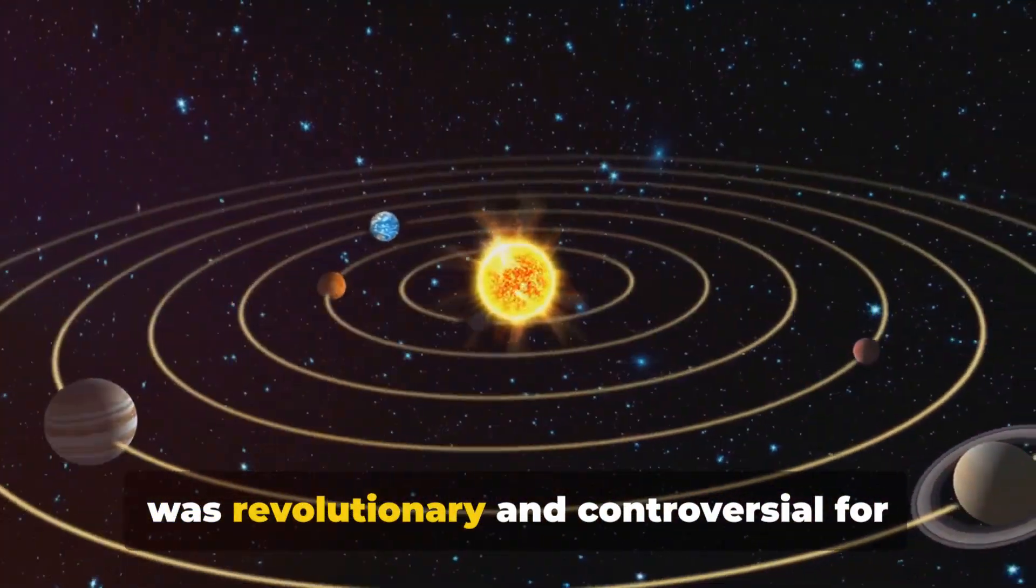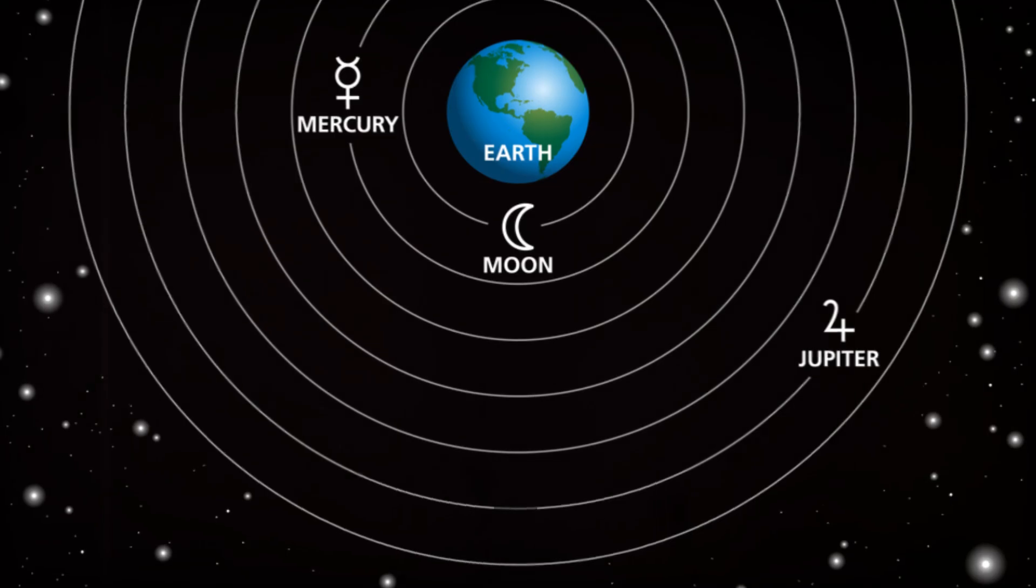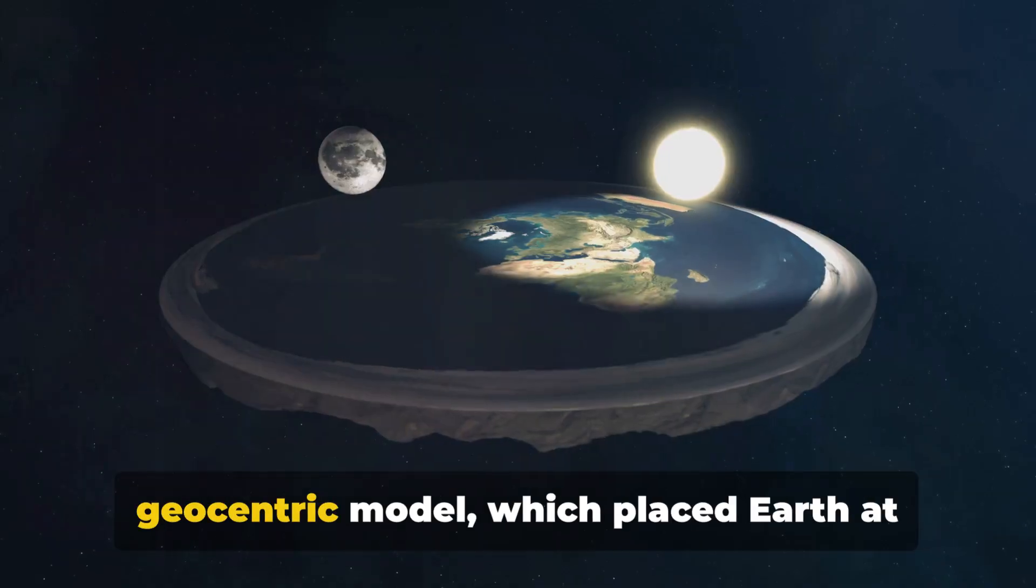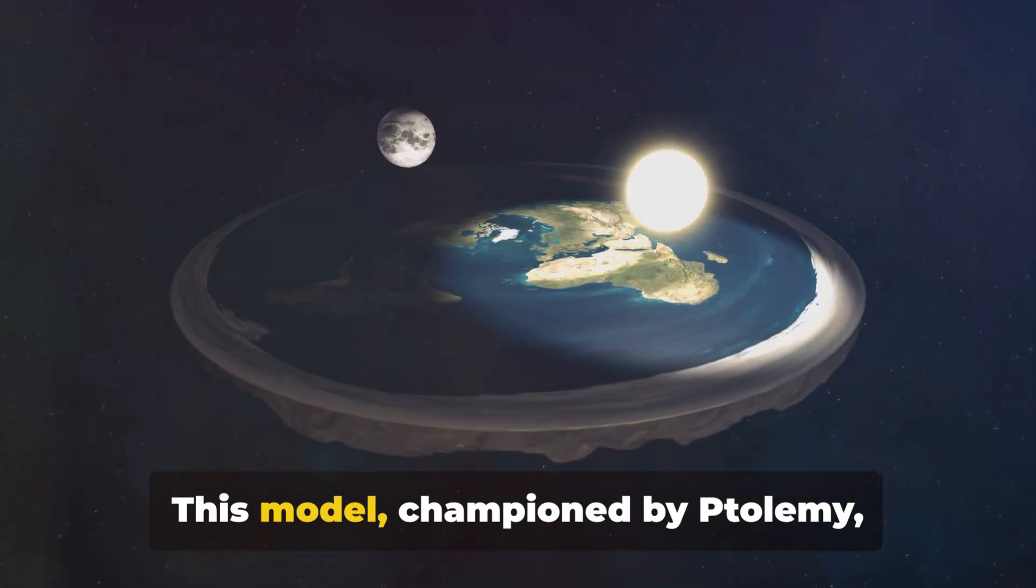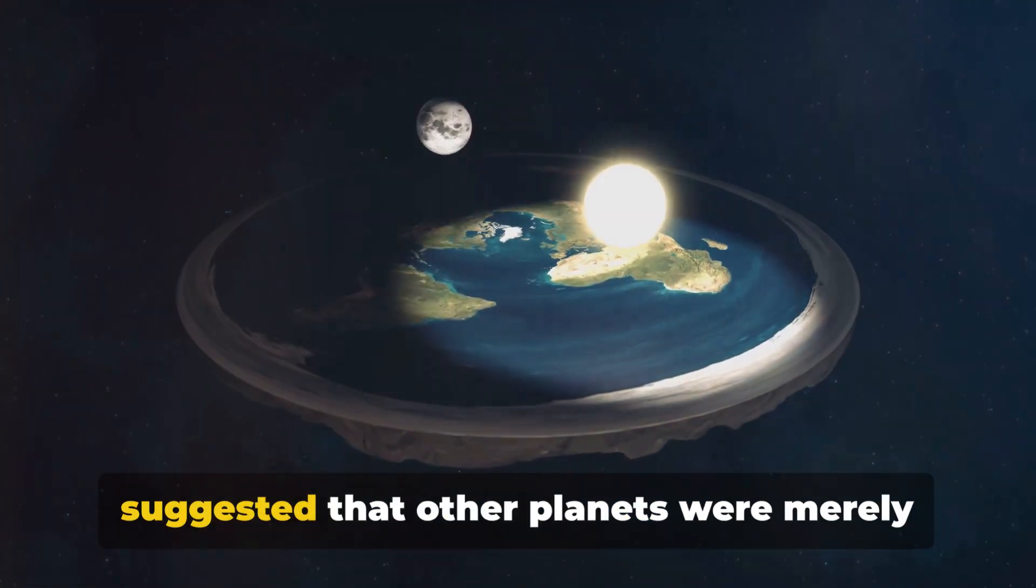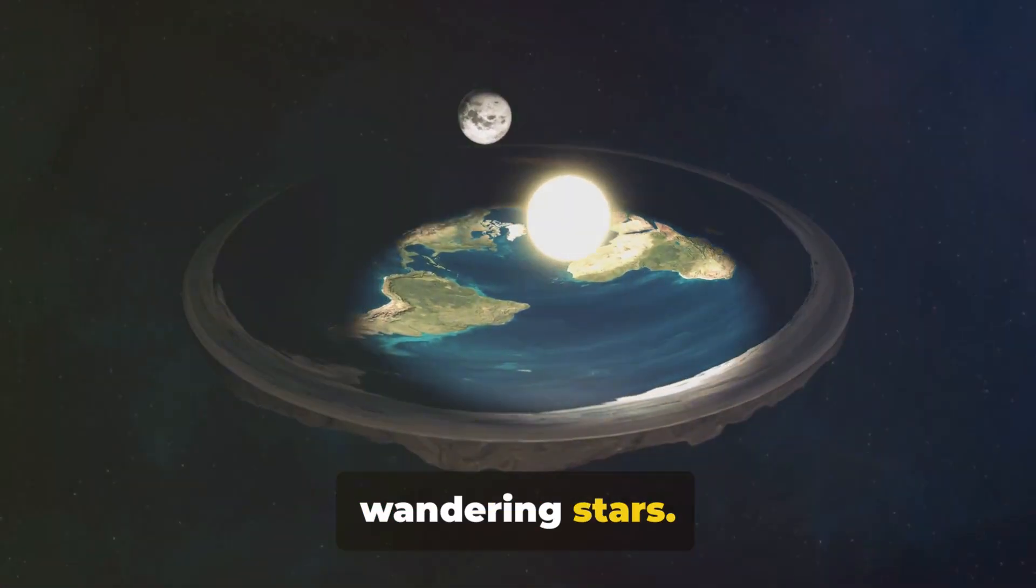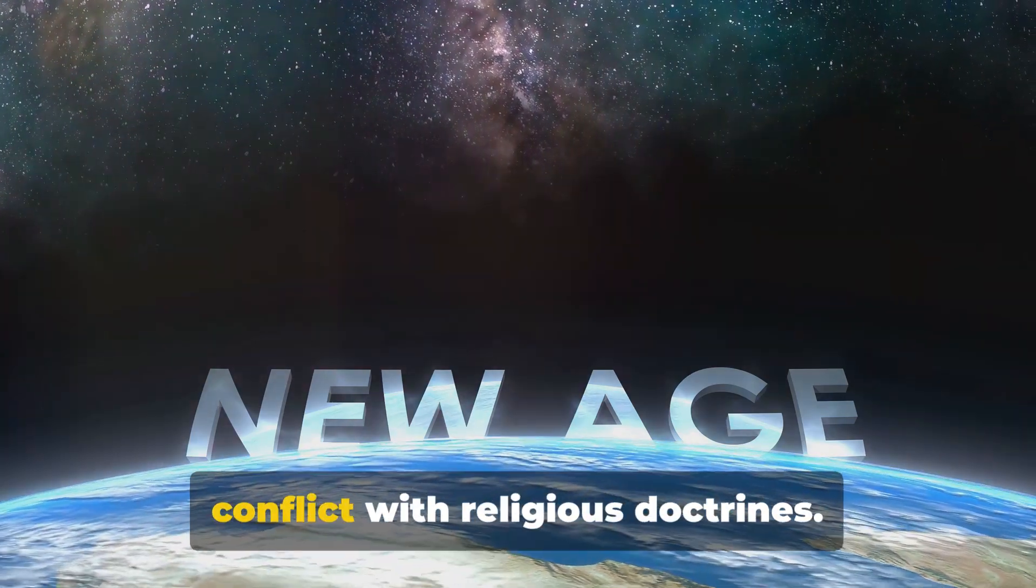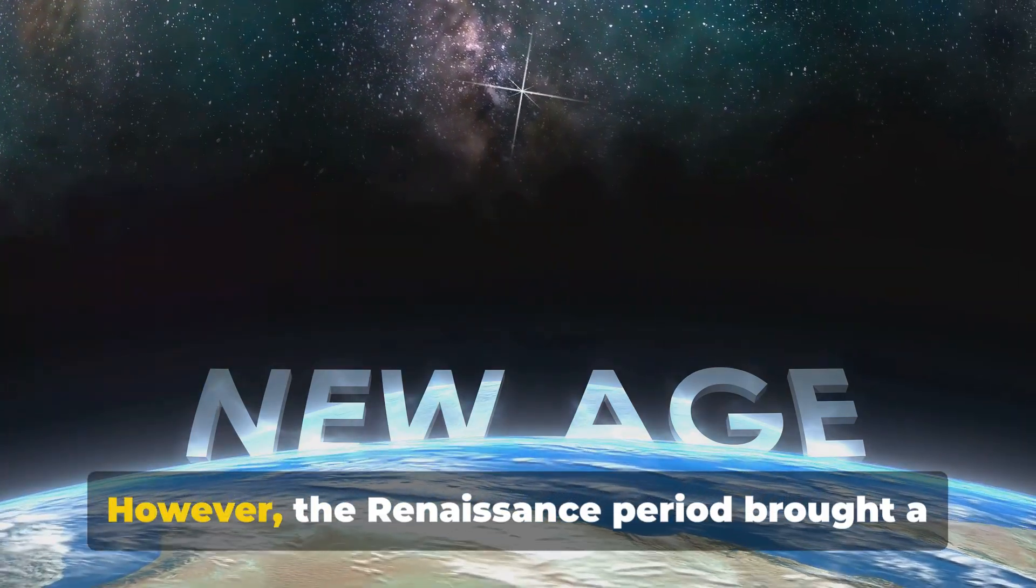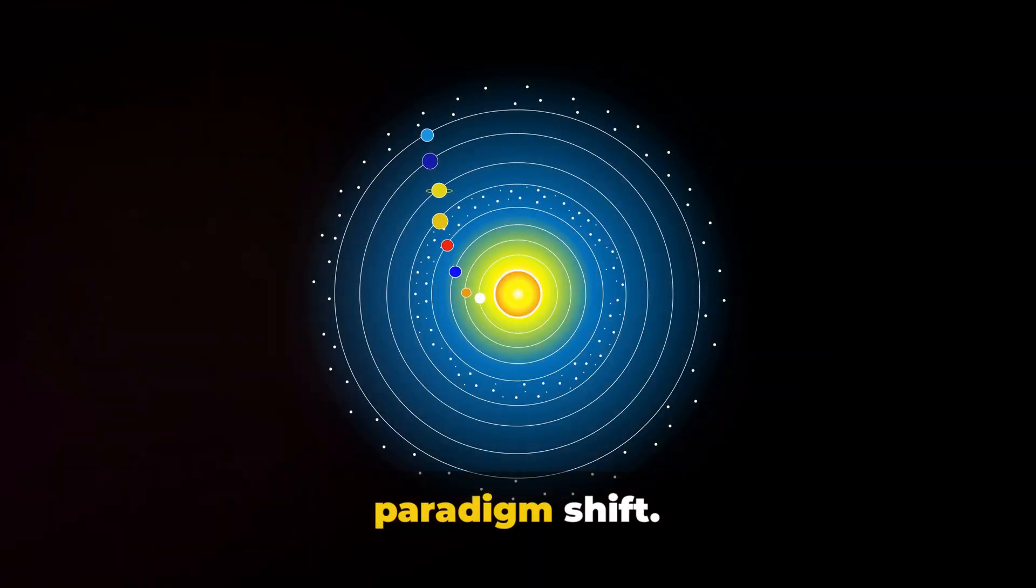They proposed the idea of infinite worlds teeming with life, a thought that was revolutionary and controversial for its time. The Middle Ages saw the emergence of the geocentric model which placed Earth at the center of the universe. This model, championed by Ptolemy, suggested that other planets were merely wandering stars. The idea of life on other planets was sidelined, seen as heretical and in conflict with religious doctrines. However, the Renaissance period brought a paradigm shift.